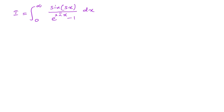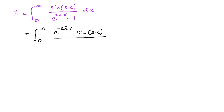As a first step, for the integral from 0 to infinity, I am going to multiply both numerator and denominator by e^(−2πx). So we have e^(−2πx) times sine(sx) over 1 minus e^(−2πx) dx.